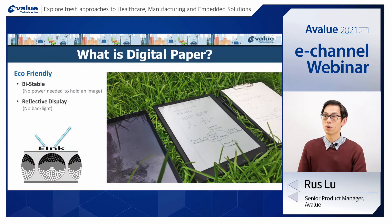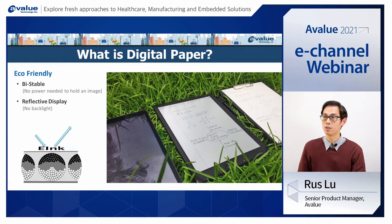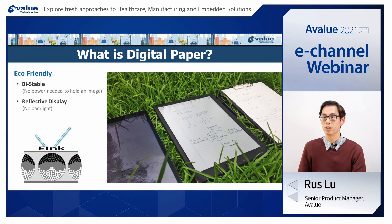First of all, I will talk about what is digital paper. Digital paper is a digital display which is just like a traditional paper. If you love reading, you may be familiar with Amazon Kindle, which applies digital paper technology from e-ink. This technology really helps us to have a similar experience when we are reading.